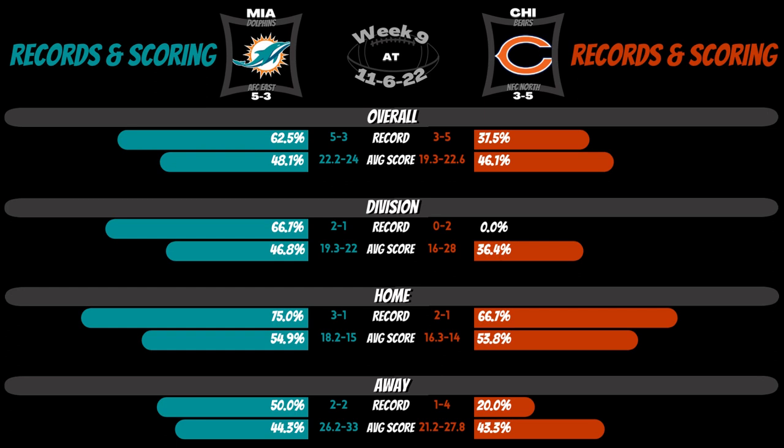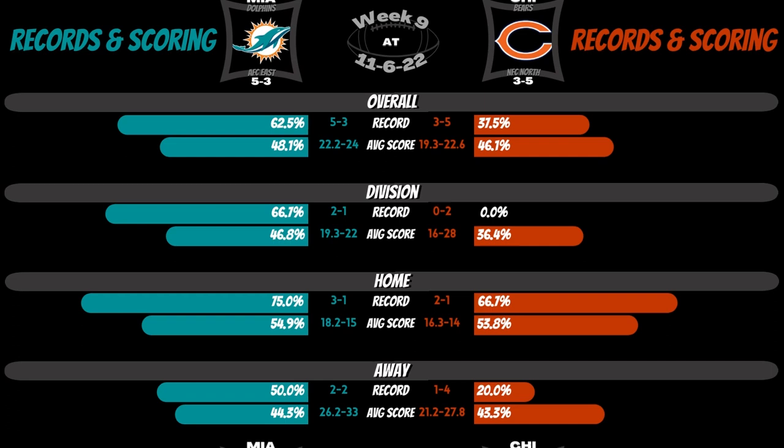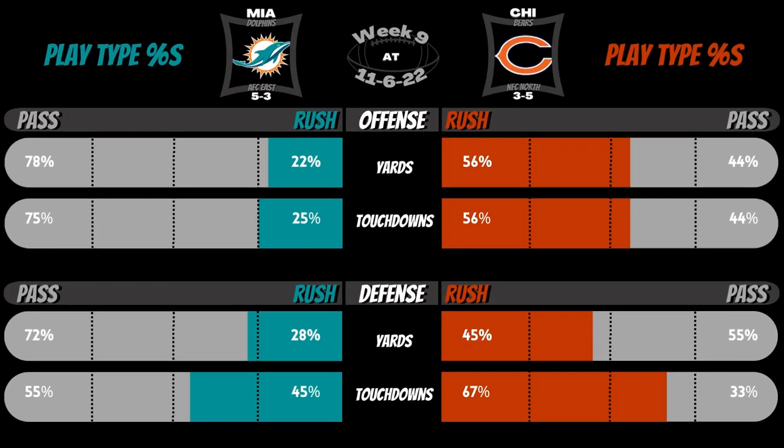Here, butterfly charts show percentages for records and scoring amongst various game types. Play type percentages purpose is to show how each offense's play calls go between pass and rush, and the ratio of the two for yards and touchdowns. The same is shown for defense to see what the opponent allows more of.